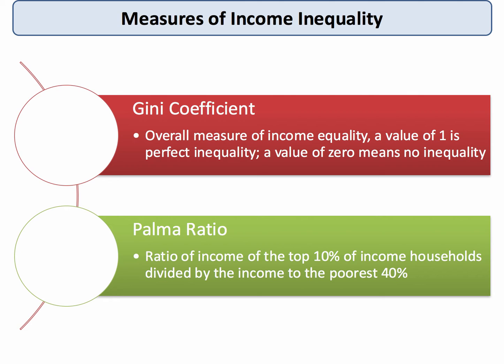The Palma ratio is an interesting one — it's just a different way of looking at income inequality. It's calculated by the ratio of the income of the top 10% of households, the richest 10%, divided by the accumulated income — the sum of the income — of the poorest 40%. So again, it's an attempt to measure the extent to which the richest 10% of the population have significantly more income than the income of the bottom 40% added together.